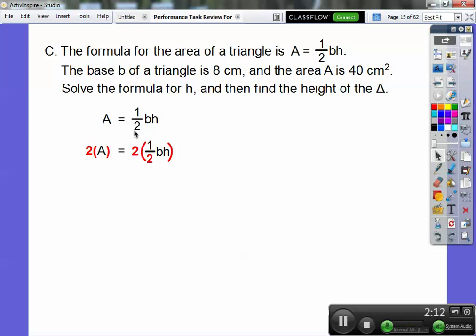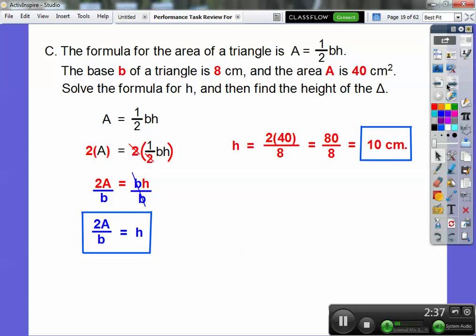Multiply both sides by 2 to get rid of the 2. You get 2A equals bh. Then divide by b to get h equals 2A over b. That's the first part. Now we can plug in A equals 40 and b equals 8. When we solve, we get 10 centimeters. Always answer in the context of the problem.